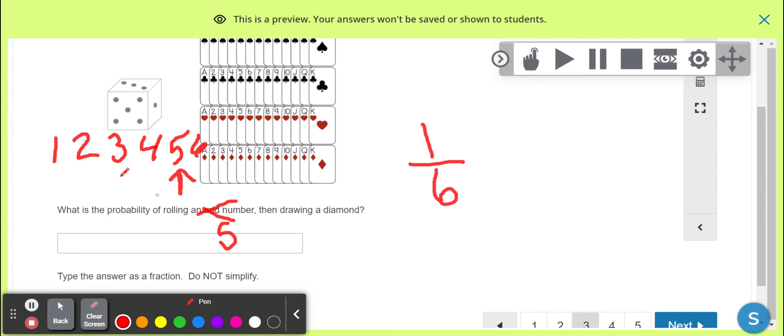So then going back to odd. For the odd numbers, an odd number ends in 1, 3, 5, 7, 9. But we don't have 7 or 9 on the dice. So of the ones I've circled, what fraction of these 6 numbers are odd?